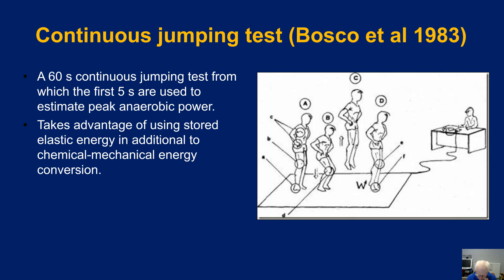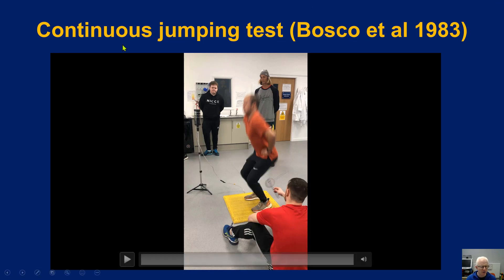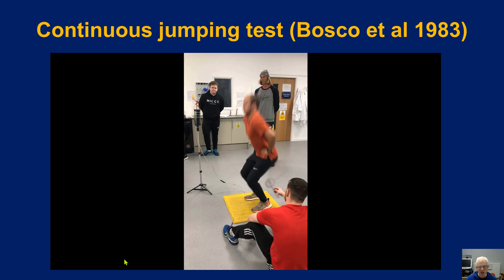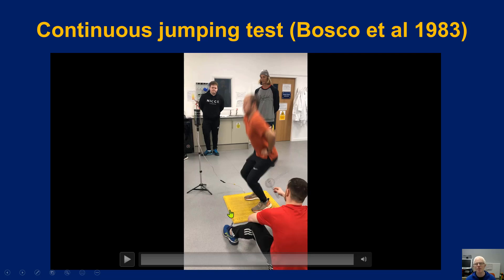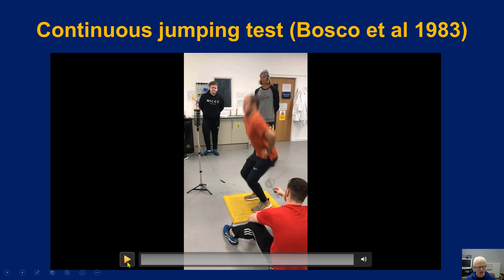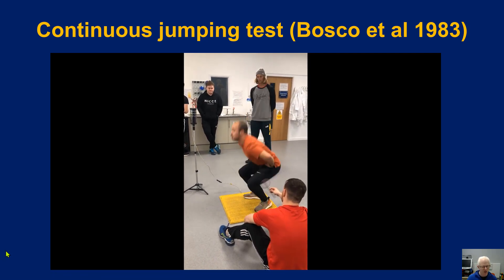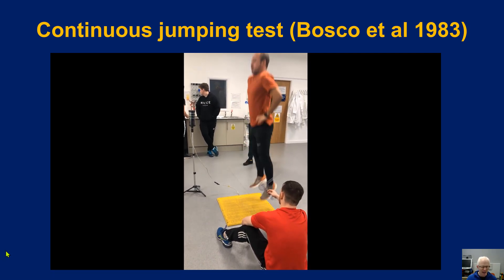Now we're going to show you a video demonstration. The participant here is going for a slightly longer version — 10 seconds — primarily to enable demonstration. We're using a contact mat, which counts the number of jumps and, using the formula shown previously, enables us to measure jump height on a repeat basis. Let's watch the protocol: he's jumping as high as he can and as fast as he can, hands on hips.